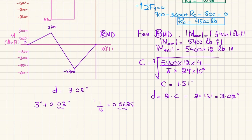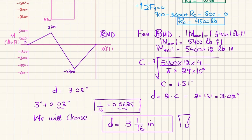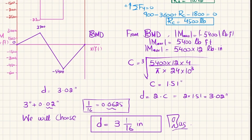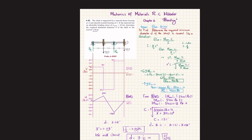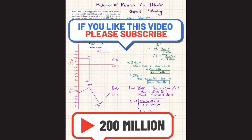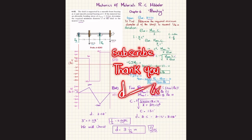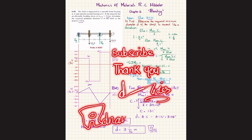We choose diameter d = 3 1/16 inch. This is the answer: a 3 1/16-inch diameter shaft is selected for this shaft under the given loading and an allowable bending stress of 24 ksi. That was all about problem 6-83. I hope you enjoyed and learned from this video. If you are new to my channel, please subscribe and press the bell icon for notifications about my latest videos. If you have any questions, ask in the comment section. Thank you for watching.